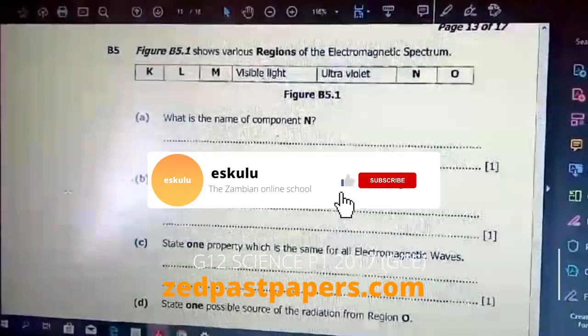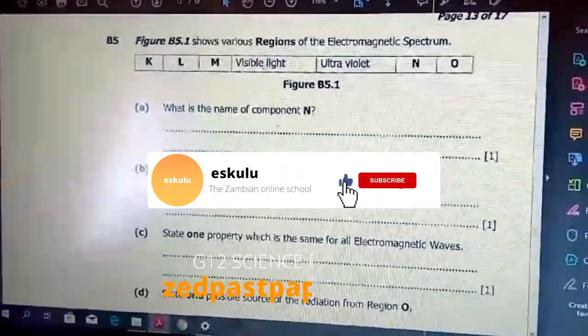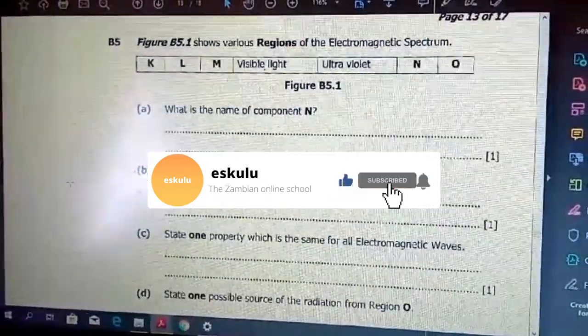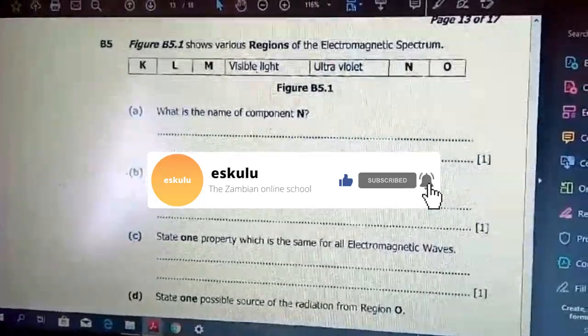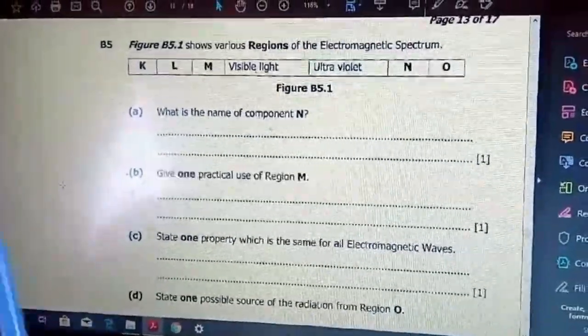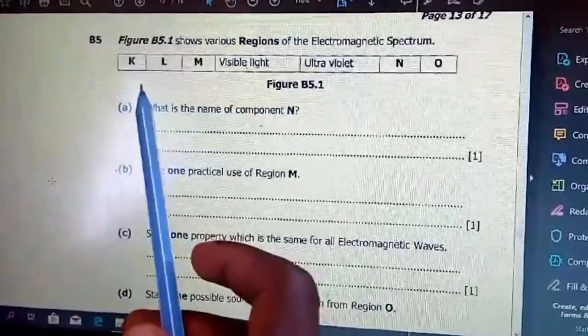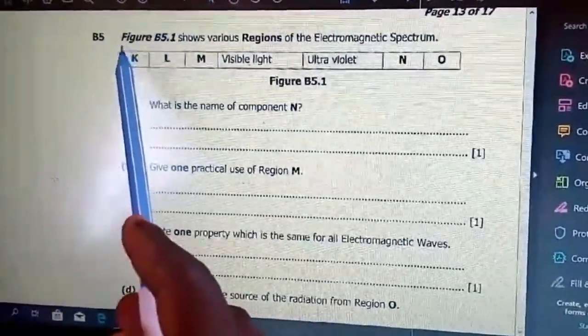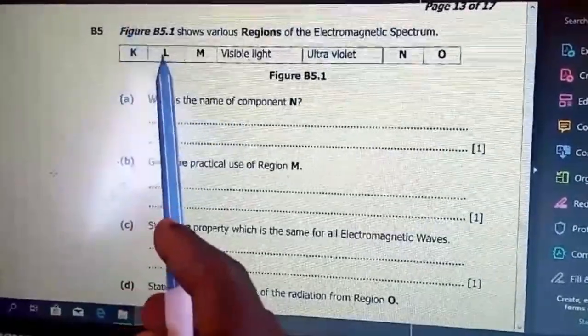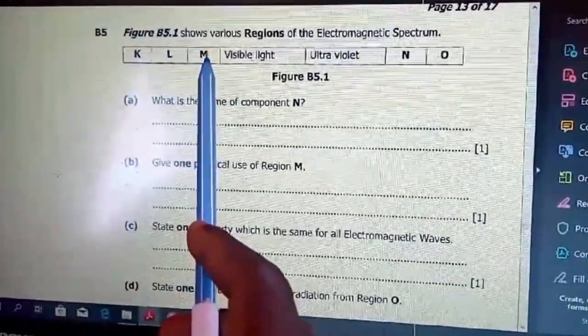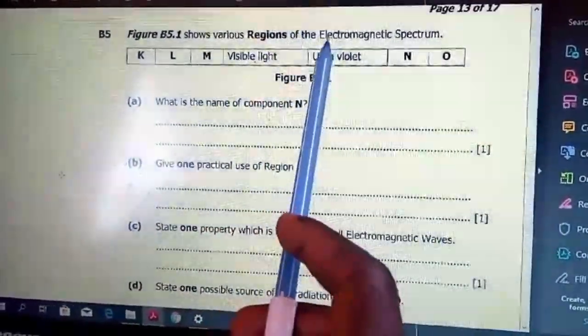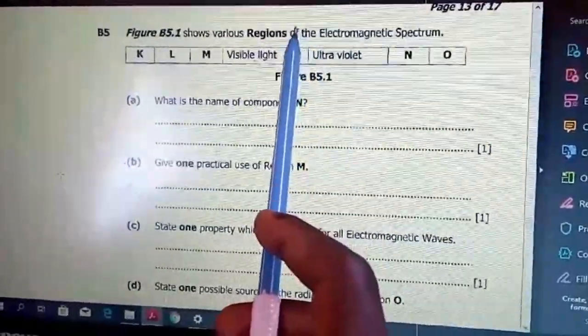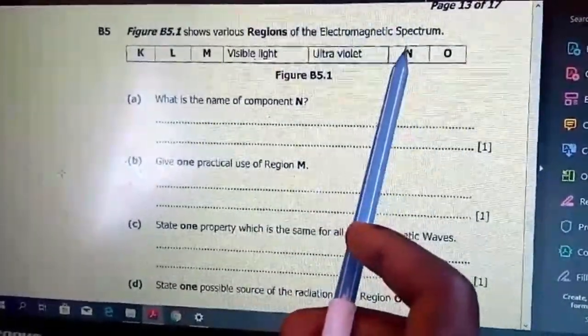We go to question 5, which shows various regions of the electromagnetic spectrum. What is the name of component N? Instead of just naming N, we're going to name all the components: radio waves, microwaves, infrared rays, visible light, ultraviolet, x-rays, and gamma rays.